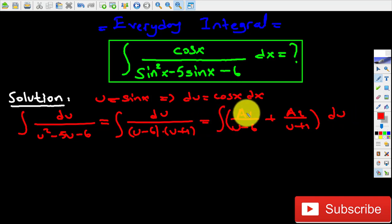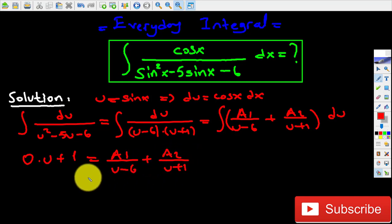Now we need to figure out what is A1 value and what is A2 value. Basically, 0 times (u plus 1) is equal to A1 over (u minus 6) plus A2 over (u plus 1). Now you can use the greatest common factor to simplify the expression, or you can do cross multiplication. I'd rather choose doing the cross multiplication. So basically, 0 times (u plus 1) is going to be equal to A1(u plus 1).